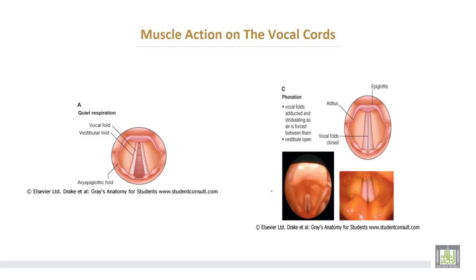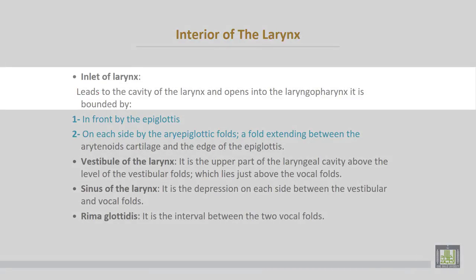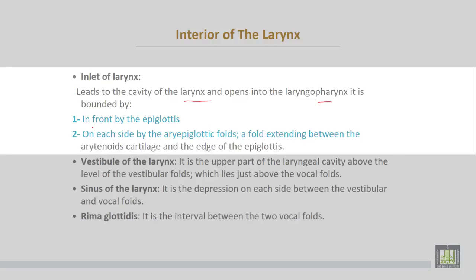This shows the vocal cords — abducted and adducted positions. Interior of the larynx: the inlet of the larynx leads to the cavity of the larynx, which opens into the laryngopharynx and is bounded by the epiglottis in front, and on each side by aryepiglottic folds — folds extending between the arytenoid cartilages and the edges of the epiglottis.